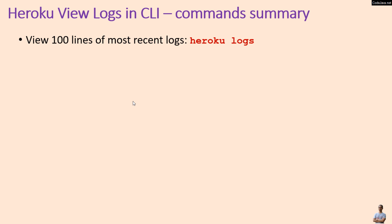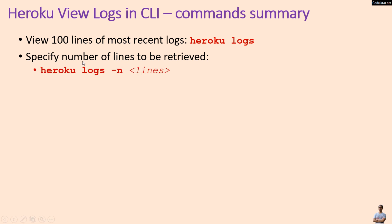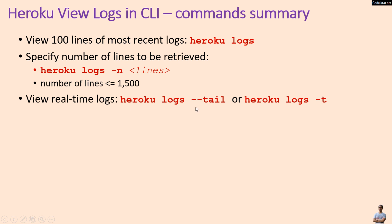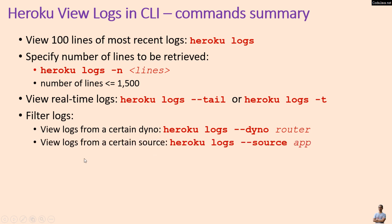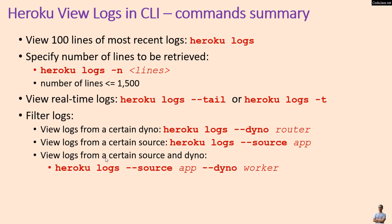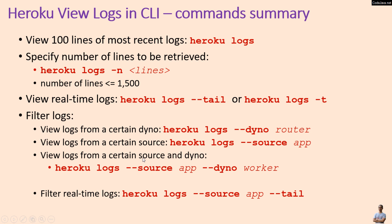To summarize the main commands: use `heroku logs` to view 100 lines of most recent logs; use the `-n` flag to specify the number of lines (maximum 1500); use `heroku logs --tail` or `heroku logs -t` for real-time logs; use `--dyno <dyno-name>` to filter by dyno; use `--source <source>` to filter by source; and combine `--source` and `--dyno` flags together, or combine `--source` with `--tail` for filtered real-time logs.